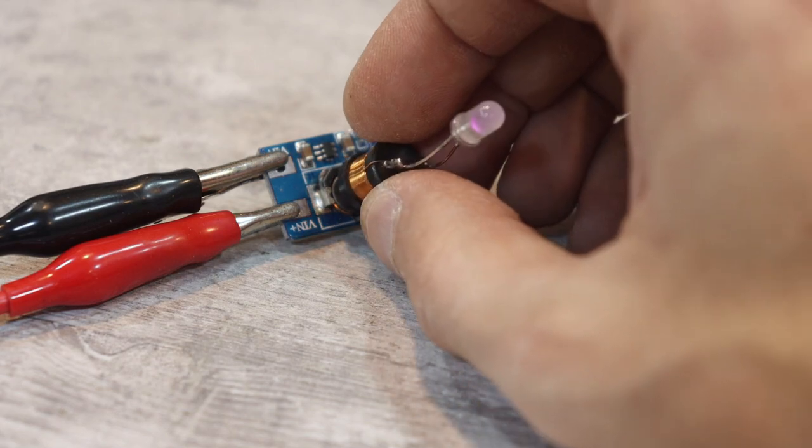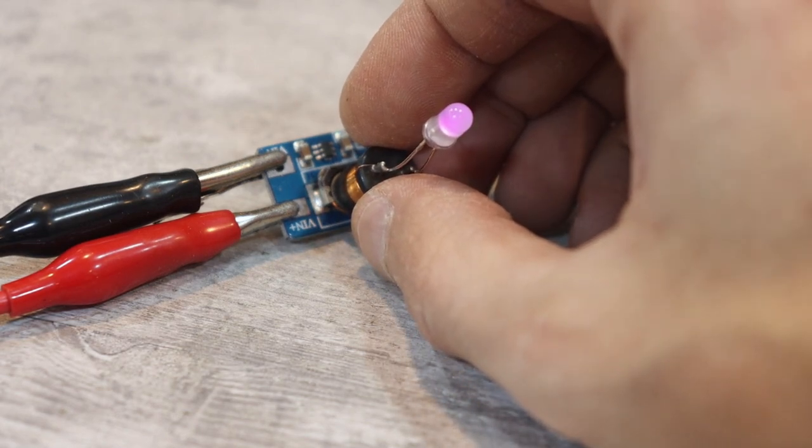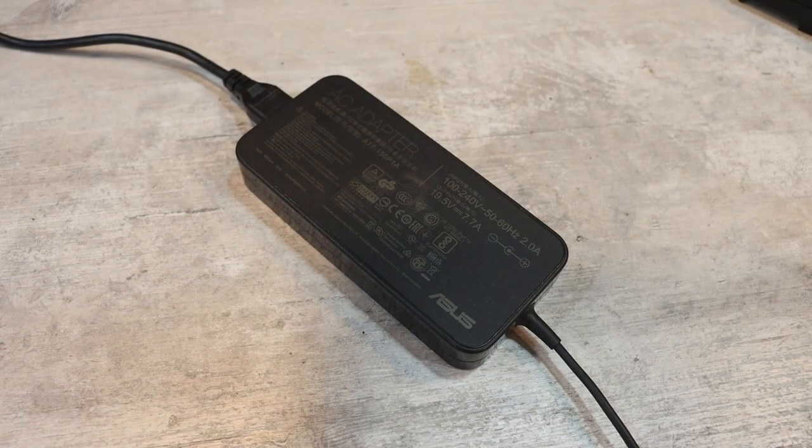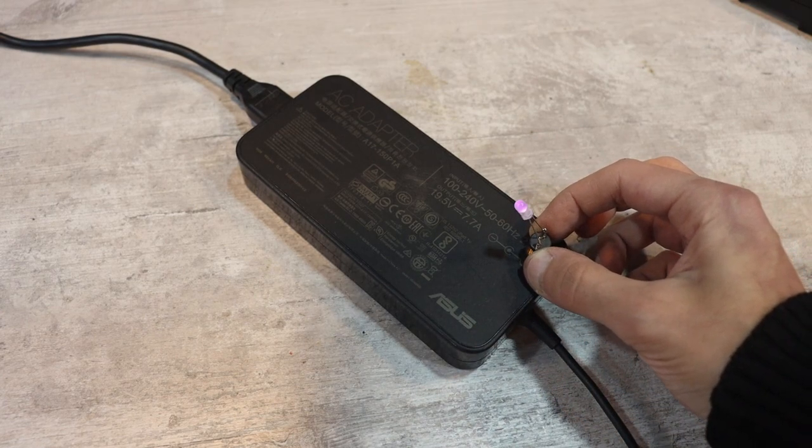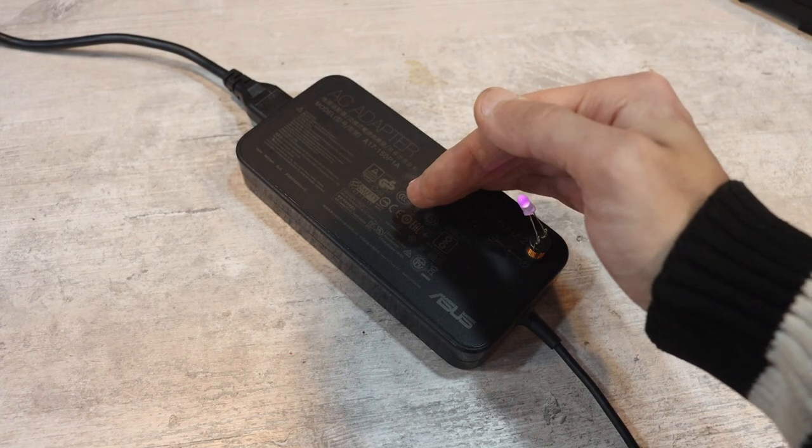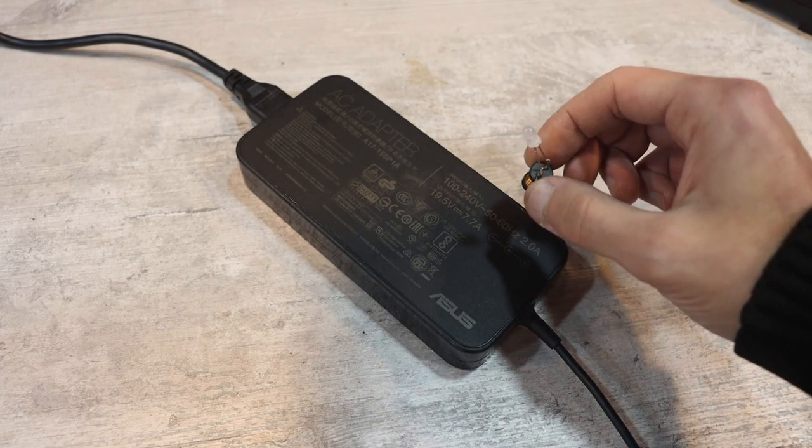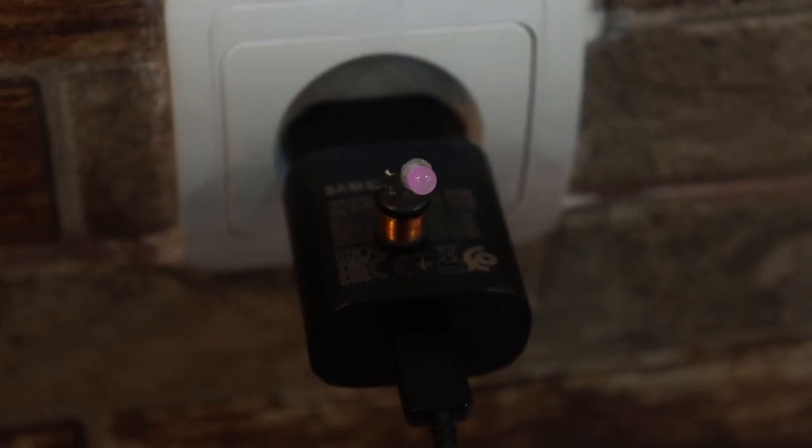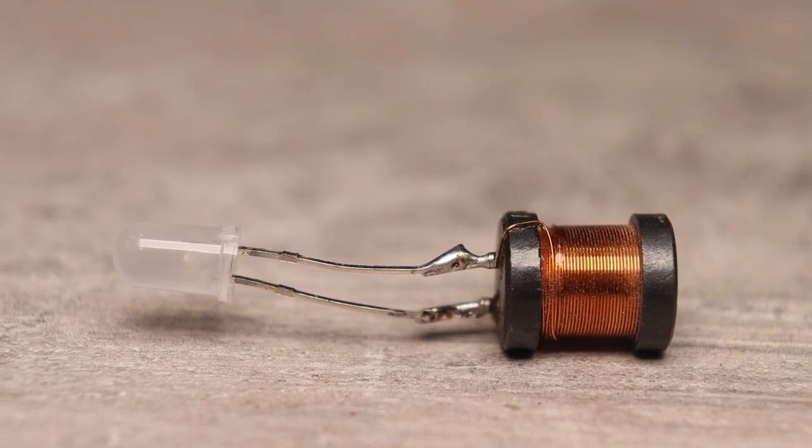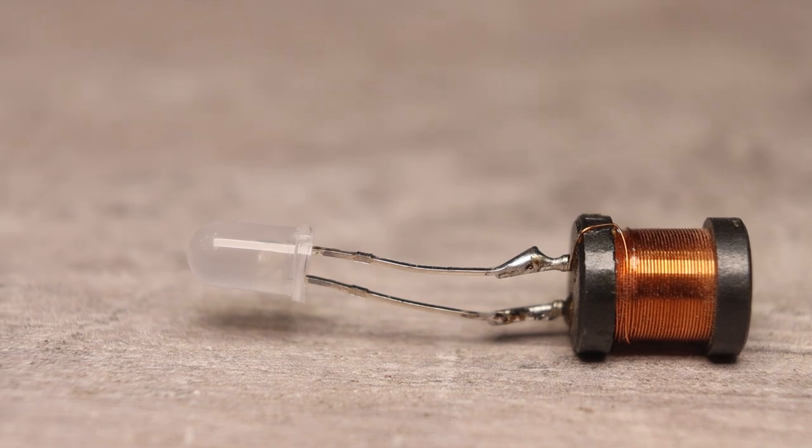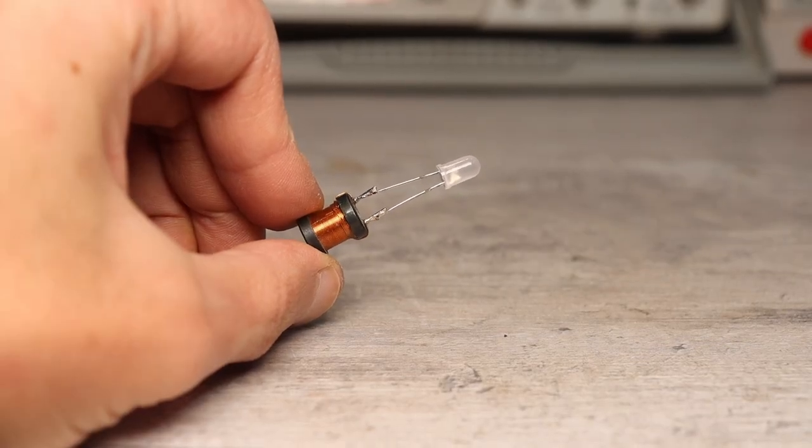When our probe is brought near devices, for example, to the DC-DC converter coil, an EMF of sufficient value is induced in it to illuminate the LED. The same thing will happen if we bring our indicator to the pulse transformers of power supplies. It is worth noting that in some cases the LED will light up only if the under-test power supply is loaded.